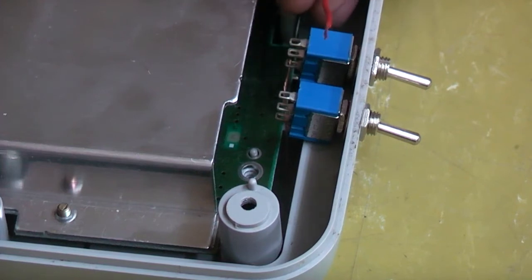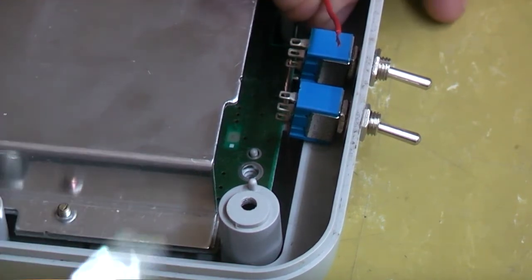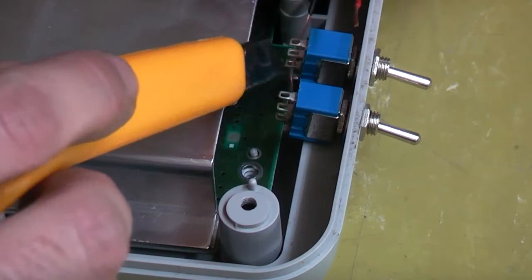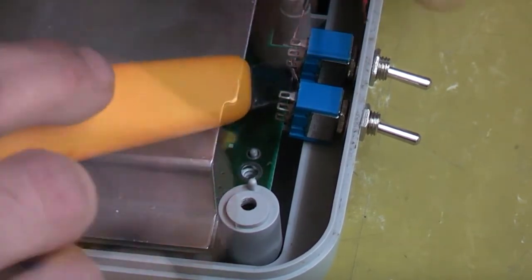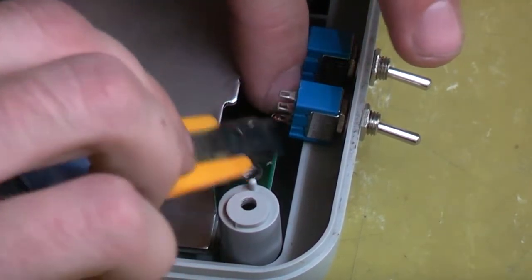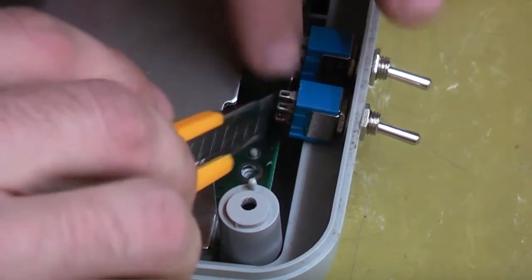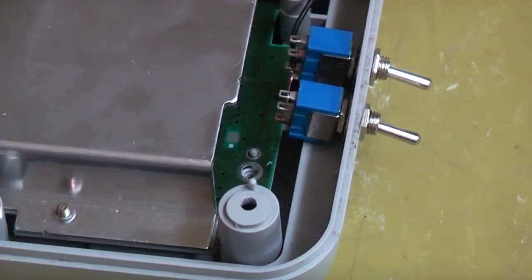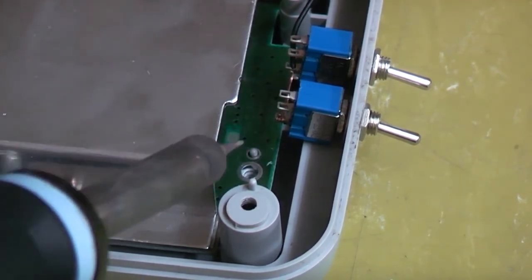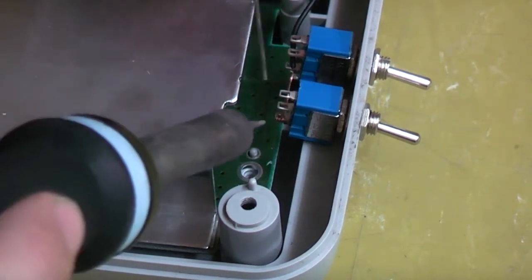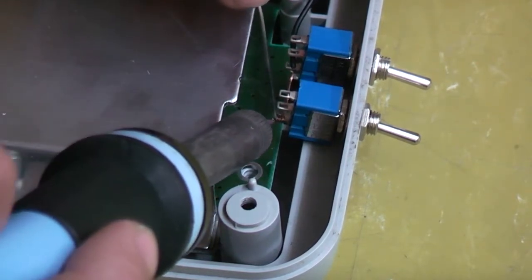So I'm going to thread it down into the bottom pin on the first switch. Now I've got our black wire threaded to the bottom two pins. I'm just going to add a little bit of solder just to keep that in place.